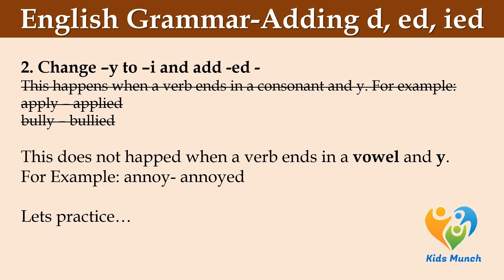There is one exception to this rule: this does not happen when a verb ends in a vowel and y. So if there is a vowel before y, then you don't need to remove y and add -ied. For example, 'annoyed' — there is a vowel before y, so you simply add -ed after y: annoyed.